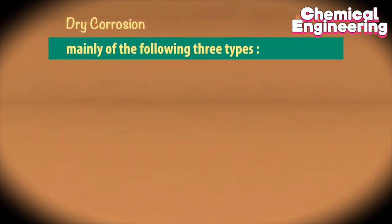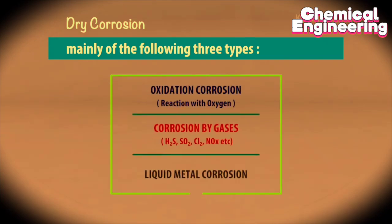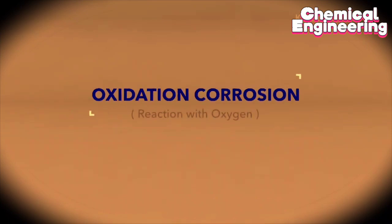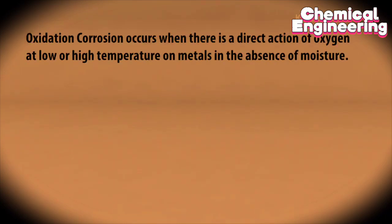Dry corrosion is mainly of the following three types: oxidation corrosion, corrosion by other gases, and liquid metal corrosion.